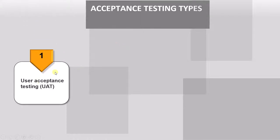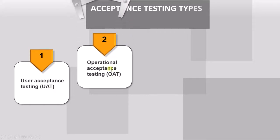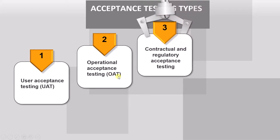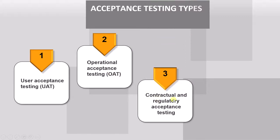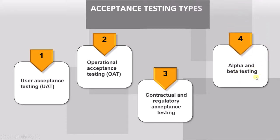The first is user acceptance testing, UAT. The second is operational acceptance testing, OAT. The third is contractual and regulatory acceptance testing. The fourth is alpha and beta testing. These are the types of acceptance testing that we will be studying about next.